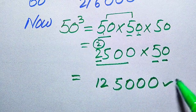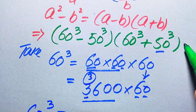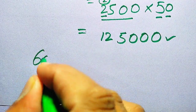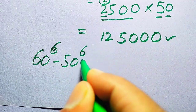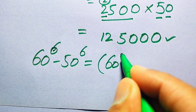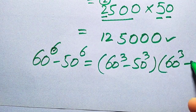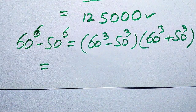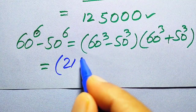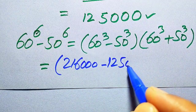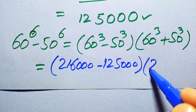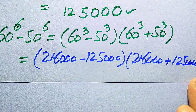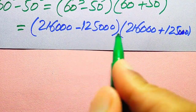We substitute both values into our expression. The expression is 60 to the power of 6 minus 50 to the power of 6, which equals 60 cubed minus 50 cubed, multiplied by 60 cubed plus 50 cubed. Substituting: the value of 60 cubed is 216,000 and the value of 50 cubed is 125,000. So we have 216,000 minus 125,000, times 216,000 plus 125,000.